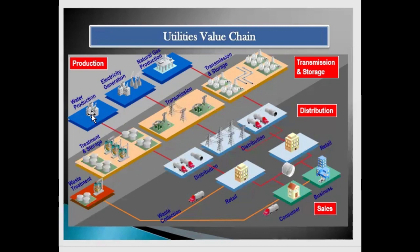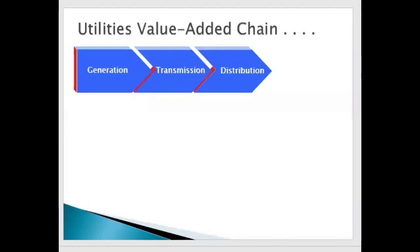For the water segment, water production is collected from rivers, then transported to treatment and storage units where minerals are removed or added to make it clean and absorbable. It then goes to the distribution unit, and from there to retailers and consumers. When discussing utility, there are always three segments in any utility: generation, transmission, and distribution. Most companies in India work at the retailer or distribution segment.